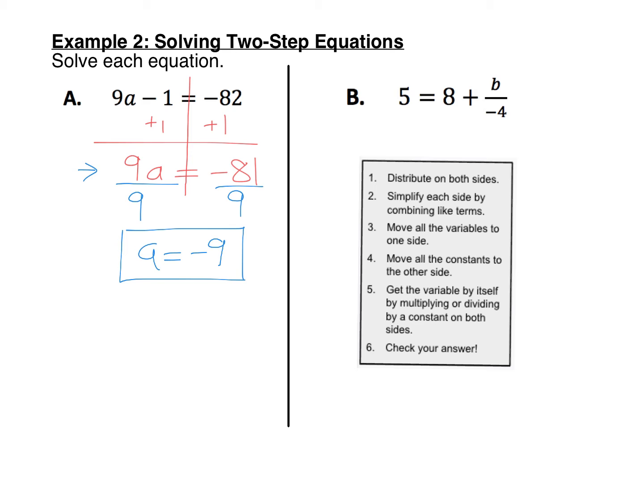Let's just double check and make sure. For the check, we go back to the original equation and replace the a with negative 9. So 9 times negative 9 minus 1 should be equal to negative 82. That's negative 81 minus 1 equals negative 82. And negative 82 equals negative 82. So it does indeed work.